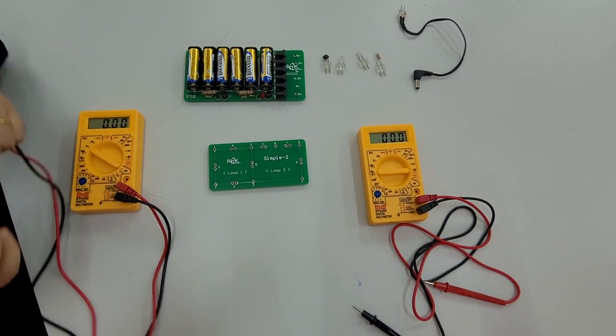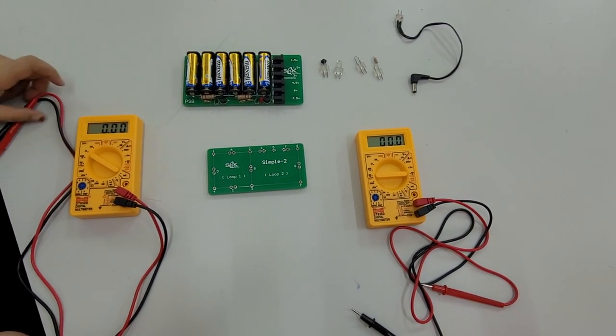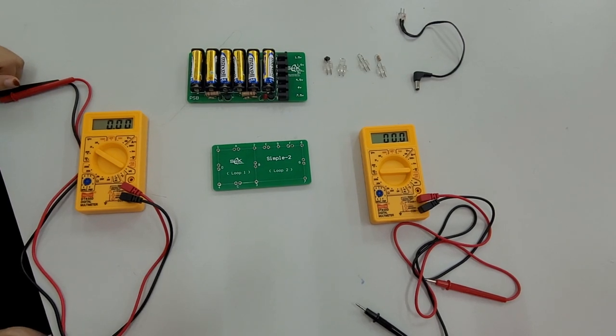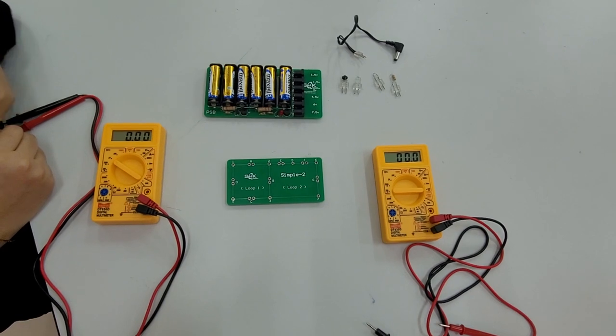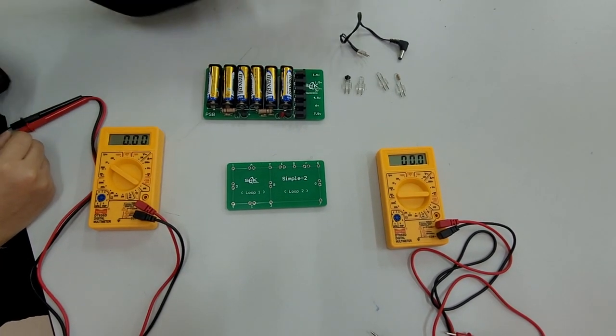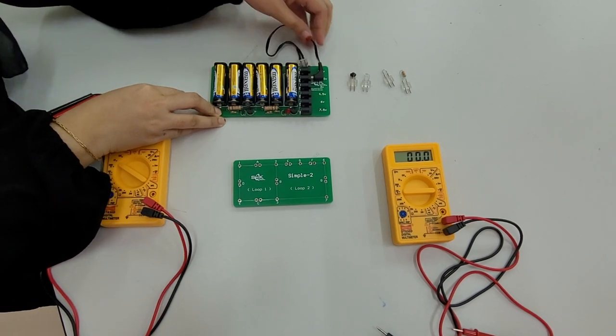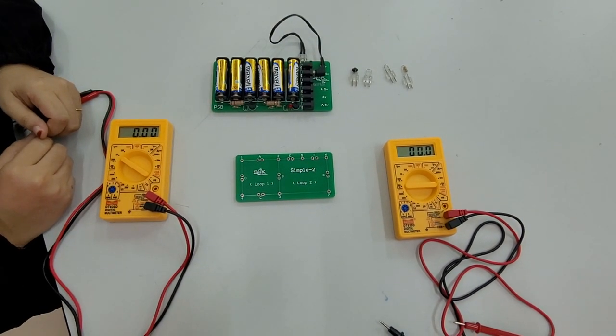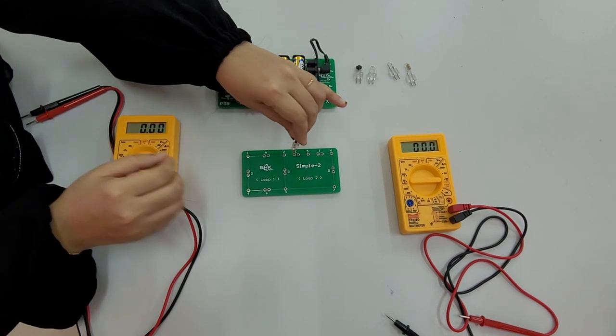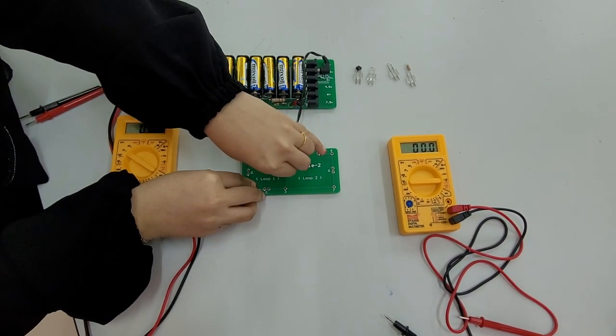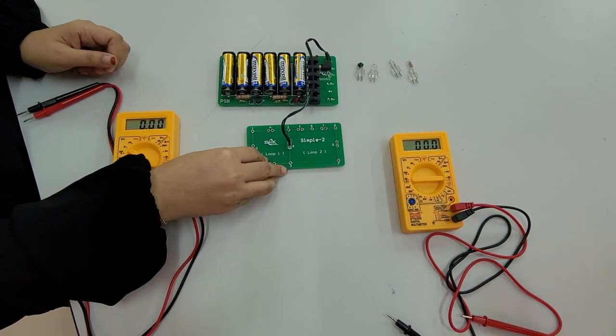We shall do the connections right away. To begin with, we have to set the voltage in PCB at 1.5 volt. Set the voltage in the PCB at 1.5 volt and insert the voltage pin in the PCB board at point B.